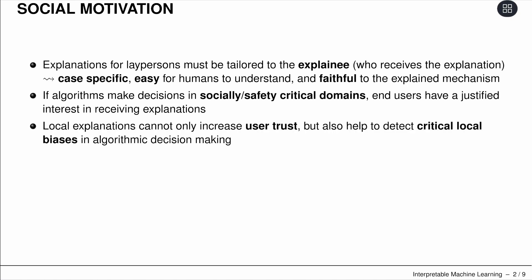Local explanations can therefore not only increase the trust of the user, but also help to detect critical local biases in algorithmic decision-making, and therefore help to increase the fairness of your models.